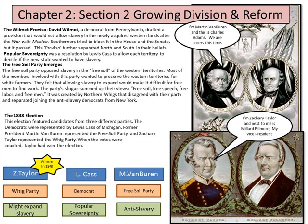The Free Soil Party was created by Northern Whigs that disagreed with their party, joining with anti-slavery Democrats of New York. In the 1848 election, the Democrats were represented by Louis Cass of Michigan, former President Martin Van Buren represented the Free Soil Party, and Zachary Taylor represented the Whig Party. When the votes were counted, Taylor won the election.